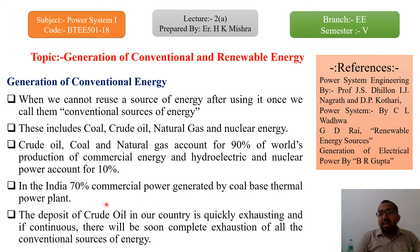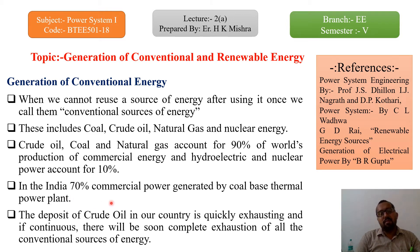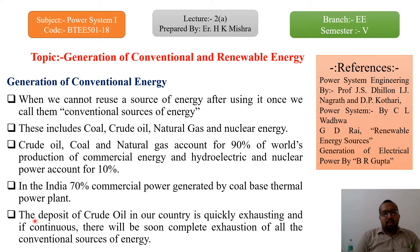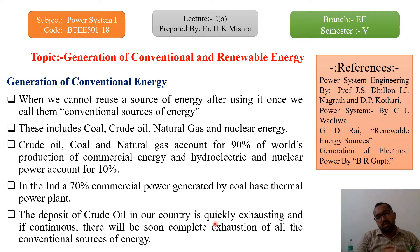In India, seventy percent of commercial power is generated by coal-based thermal power plants. Various NTPC — National Thermal Power Corporation Limited — sites are located across the country contributing this seventy percent. NTPC also uses gas power plants and hydro-thermal coordination. One power plant is located in NHPC in Bilaspur, Himachal Pradesh. The deposit of crude oil in our country is quickly exhausting, and if this continues, there will soon be complete exhaustion of all conventional sources of energy.